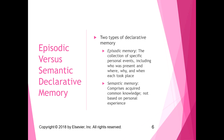There are two subtypes of declarative memory. Episodic memory is a collection of specific personal events — who was present, where, why, and when each took place. For example, remembering a specific trip to the lake where everyone brought the same thing for lunch — that's episodic memory. Semantic memory comprises acquired common knowledge not based on personal experience. Stories shared in lectures give you common knowledge based on someone else's experience, and knowing the context of things to get by in daily life is your semantic memory.